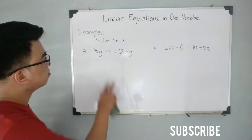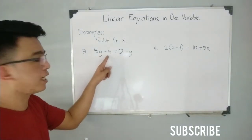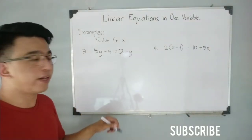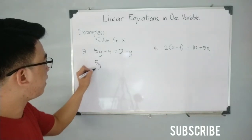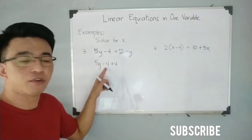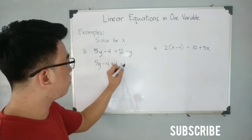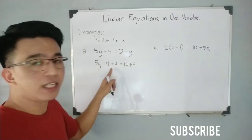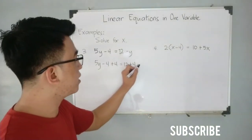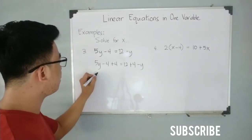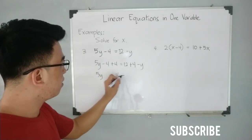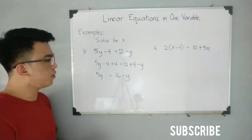We need to isolate and find the variable y. Our first step is to eliminate negative 4. By the addition property of equality, we add 4 to both sides: 5y minus 4 plus 4 is equal to 12 plus 4 minus y. Our target is to eliminate the negative 4, so we also add 4 to the right side. Simplifying gives 5y is equal to 16 minus y.